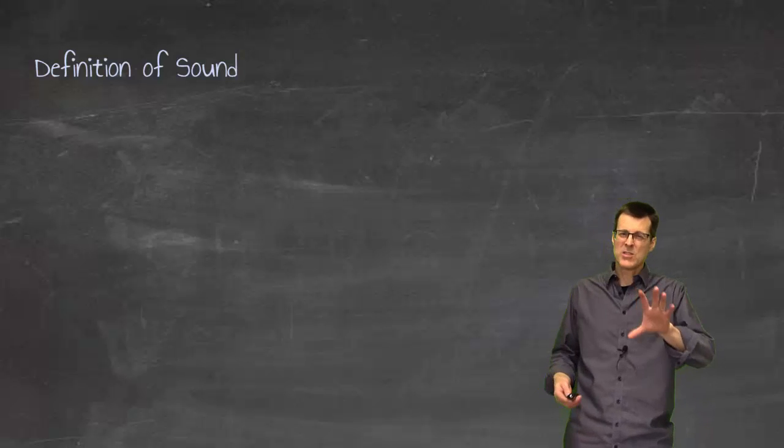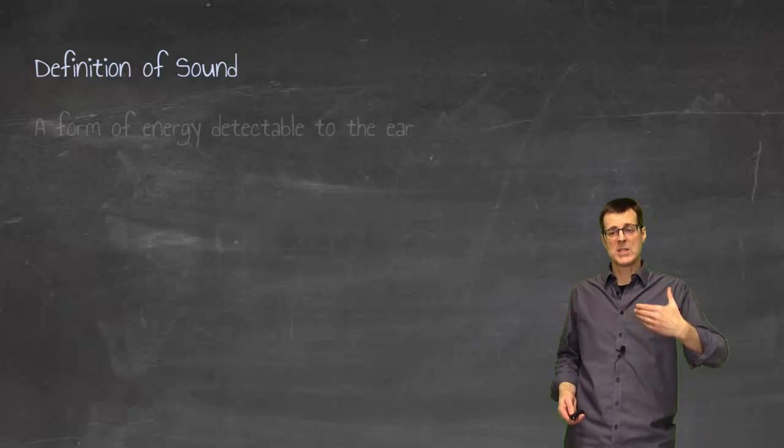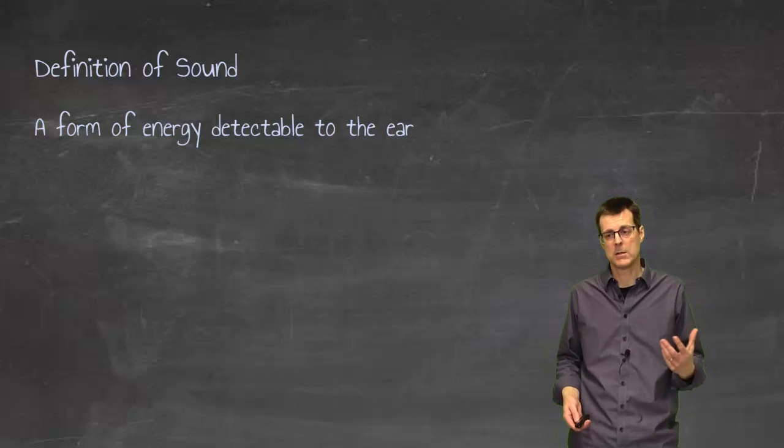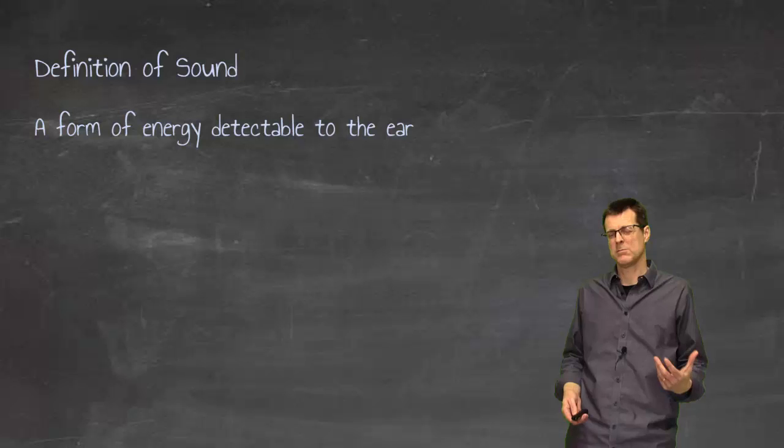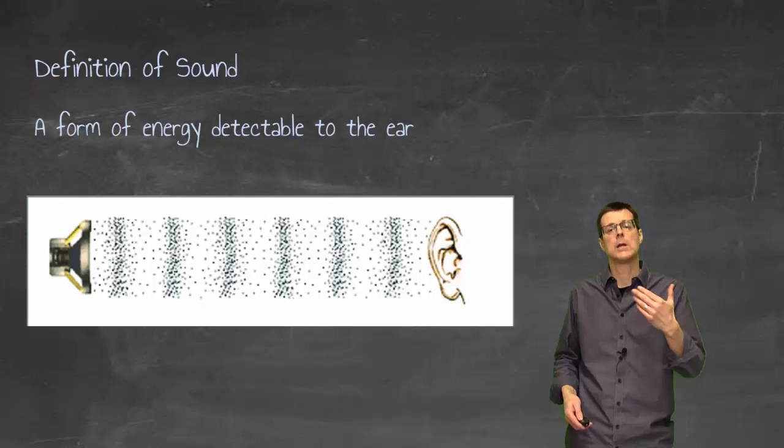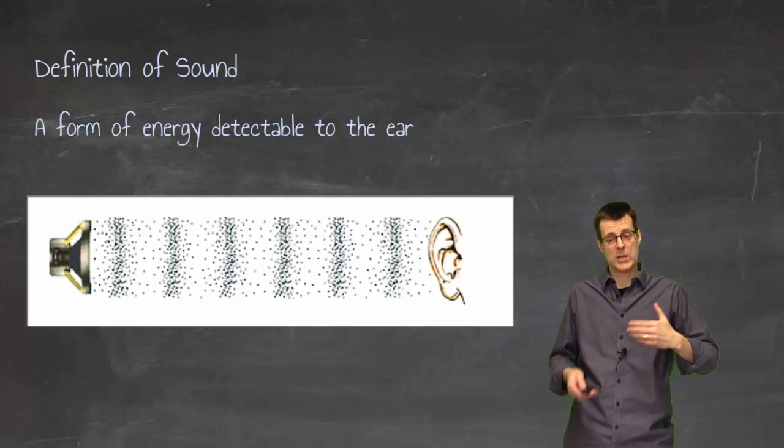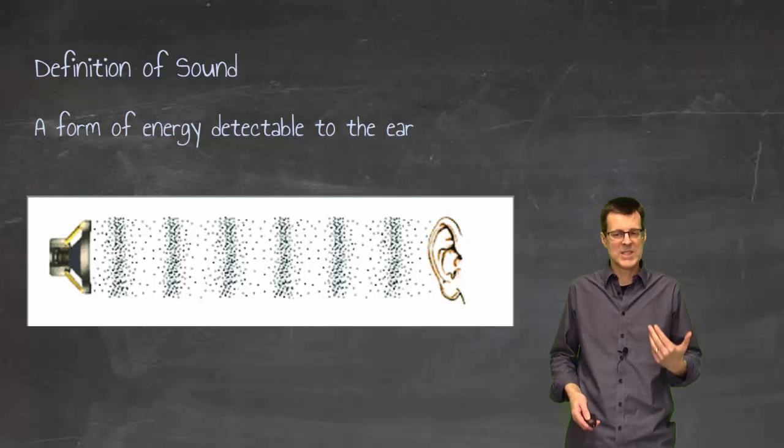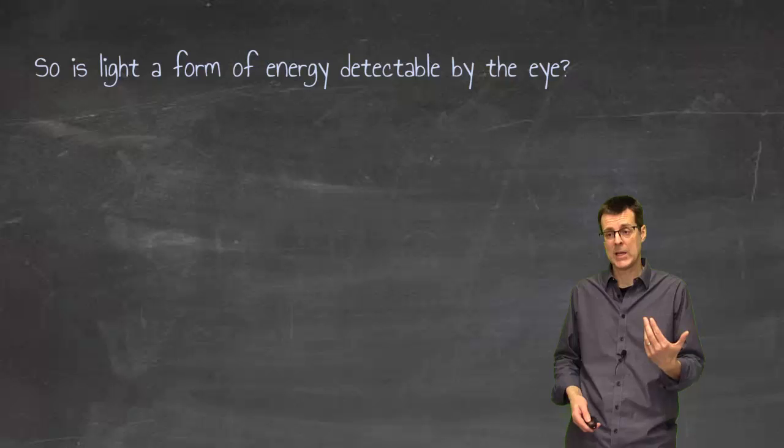So to start our discussion with talking about sound, sound is a form of energy that is detectable by the ear. And what happens is if you watch a speaker vibrating, then it's pushing air and that air then starts to compress and it transmits the energy to our ear. We're not really talking about sound waves though, we want to talk about light waves.